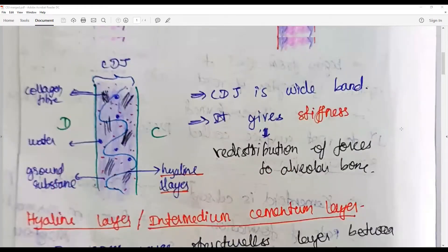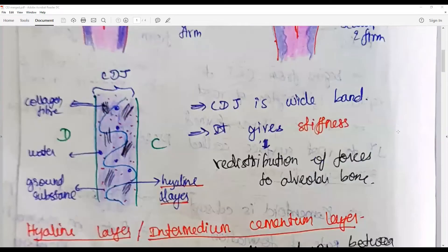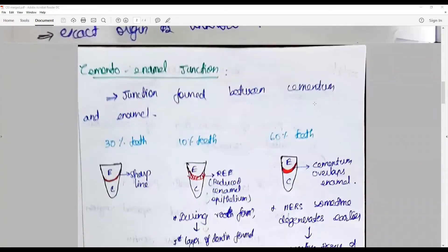So this is cemento-dentinal junction. And cemento-enamel junction is formed between the cementum and enamel.